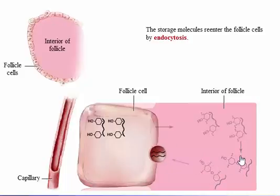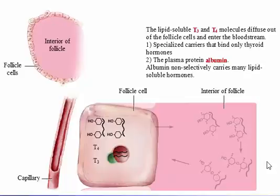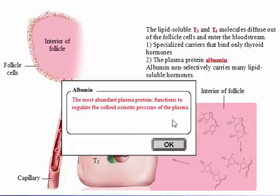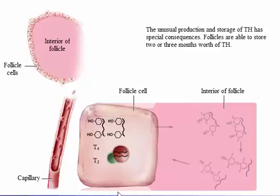At that time, the storage molecules re-enter the follicle cells by endocytosis. The endocytotic vesicles fuse with lysosomes, whose enzymes break down thyroglobulin, releasing T3 or T4 into the cytosol. The lipid-soluble T3 and T4, in a ratio of about 1 to 20, diffuse out of the follicle cells and enter the bloodstream, where they bind to two kinds of carrier proteins: specialized carriers that bind only thyroid hormones, and the plasma protein albumin. Albumin non-selectively carries many lipid-soluble hormones. Follicles are able to store two or three months' worth of thyroid hormone, an important property of an essential hormone that affects almost all tissues in the body.